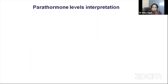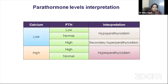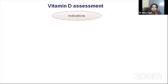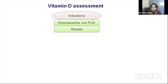Interpretation of PTH always depends on the context of calcium. Low or inappropriately normal PTH in the presence of low calcium depicts hypoparathyroidism, while high PTH with low calcium depicts secondary hyperparathyroidism as seen in chronic kidney disease. High calcium with high PTH or inappropriately normal PTH in the context of high calcium is indicative of hyperparathyroidism.